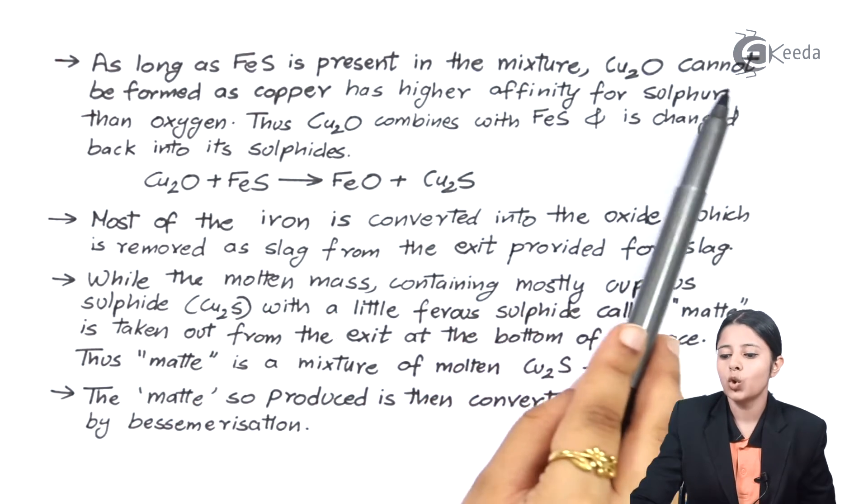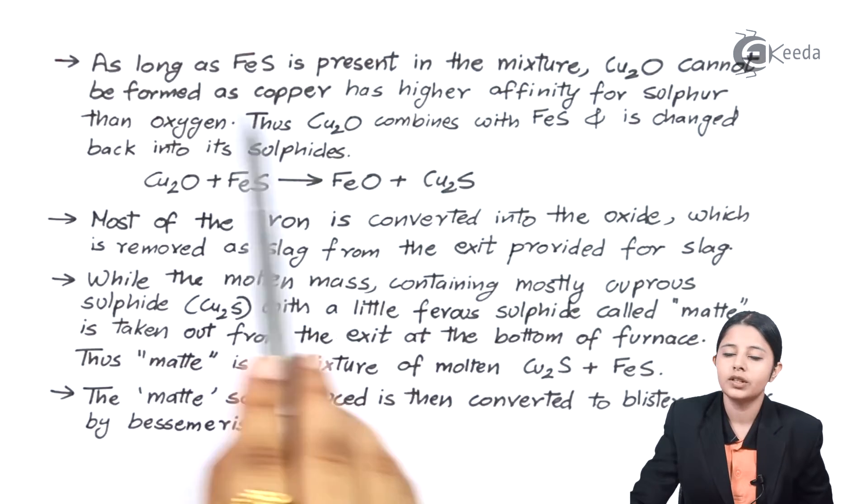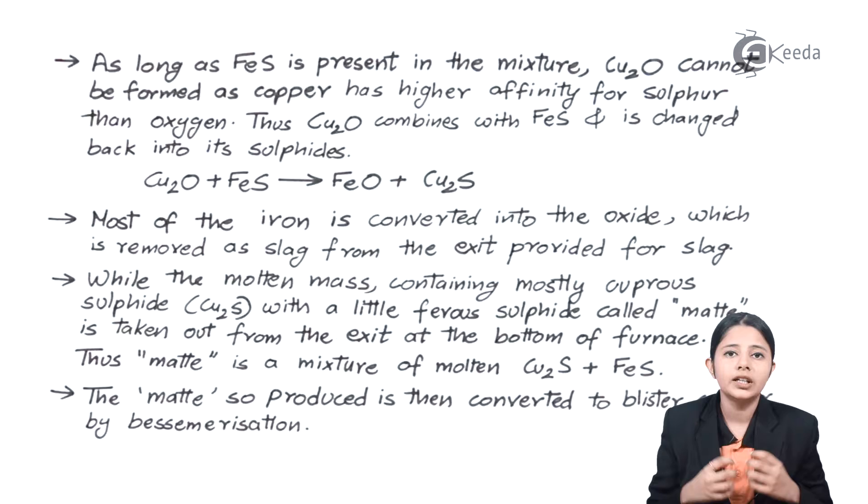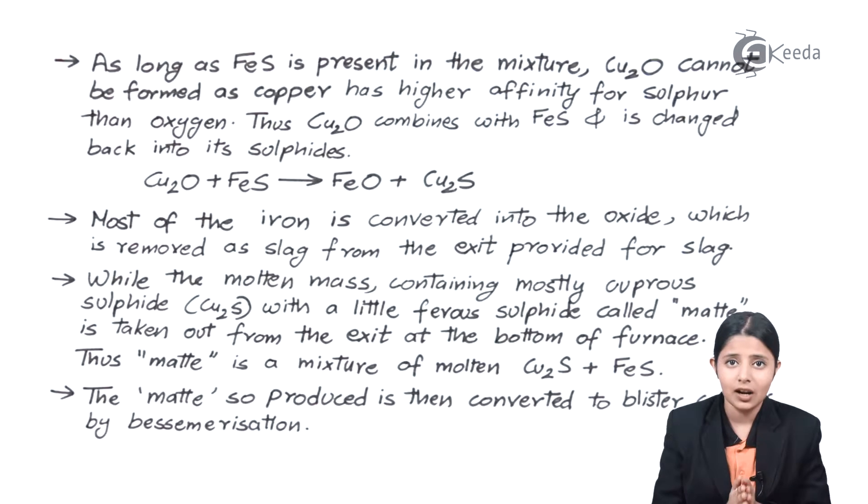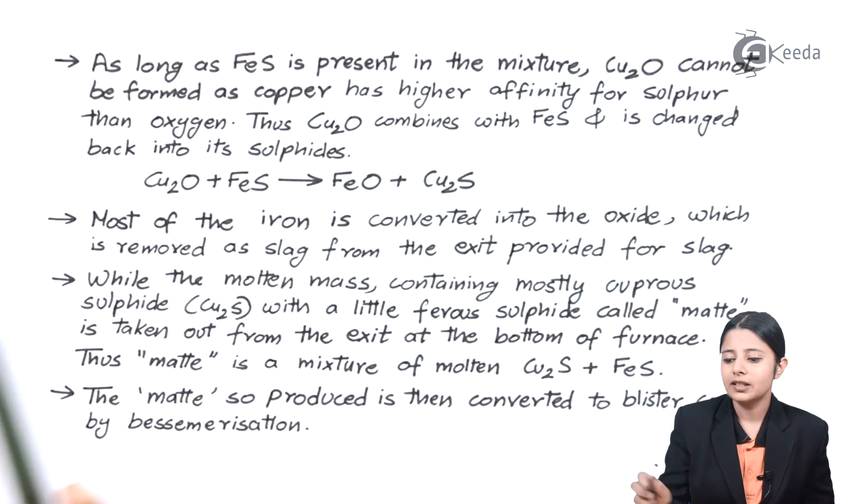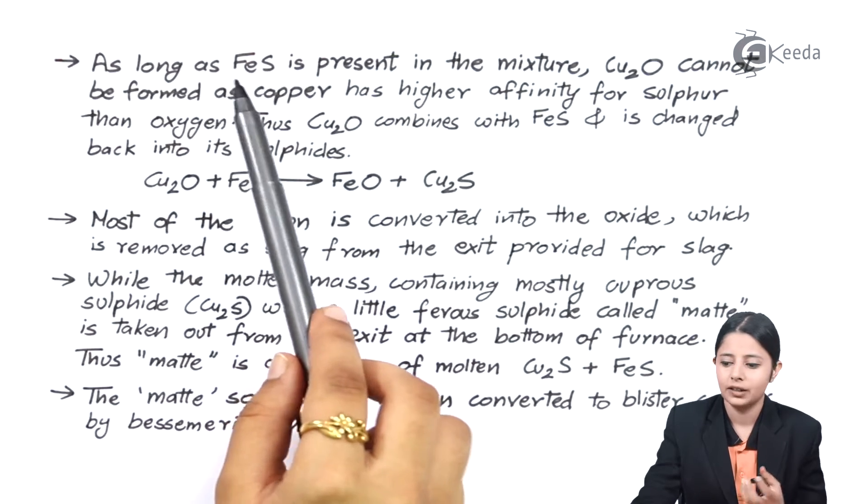As long as FeS is present in the mixture Cu2O cannot be formed. As copper has higher affinity for sulphur than oxygen, so for this we need to remove FeS from the mixture. Till now we have not even started with any reactions containing copper as such. Why? Because it is very important to remove all other impurities before the actual reaction of copper takes place. And that is the reason why we have to remove FeS which we removed in the previous reaction in the form of slag.